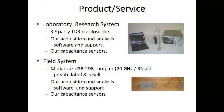Our laboratory research system uses a third-party TDR oscilloscope — I have a Hewlett Packard or Agilent TDR oscilloscope here, though we'd like to find something simpler. We make the acquisition and analysis software and provide support for its use, along with our capacitance sensors, which are the probe that actually goes in the material. The field system is a miniature USB-run TDR sampler with full 20 GHz bandwidth and 35 picosecond interrogation, which we can private-label and resell for field use, paired with our acquisition software and capacitance sensors.